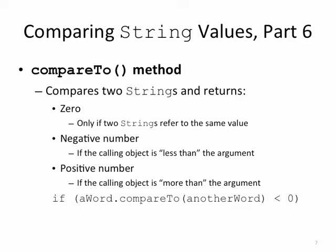So if we have if (aWord.compareTo(anotherWord) < 0), that's comparing the contents of aWord and seeing if they are less than anotherWord. Now when we say less than, we're talking about a lexicographic comparison. We will go over this in class quite a bit.